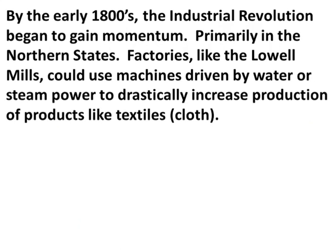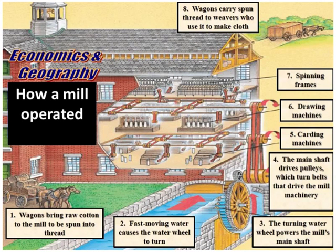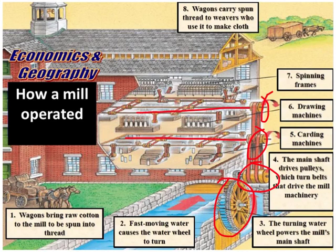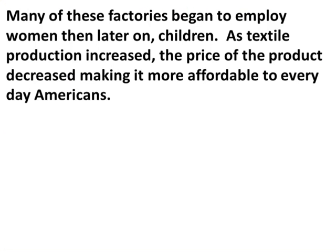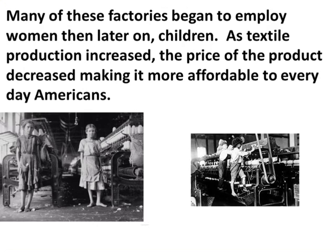By the early 1800s, the Industrial Revolution began to gain momentum, primarily in the northern states. Factories like the Lowell Mills could use machines driven by water or steam power to drastically increase production of textiles — which is cloth. This illustration shows how water was used as a power source: the water wheel turned and operated a series of belts and pulleys that drove all the machines inside the factory, turning raw cotton into thread. Many of these factories began to employ women and later children. As textile production increased, the price of the product decreased, making it more affordable to everyday Americans.